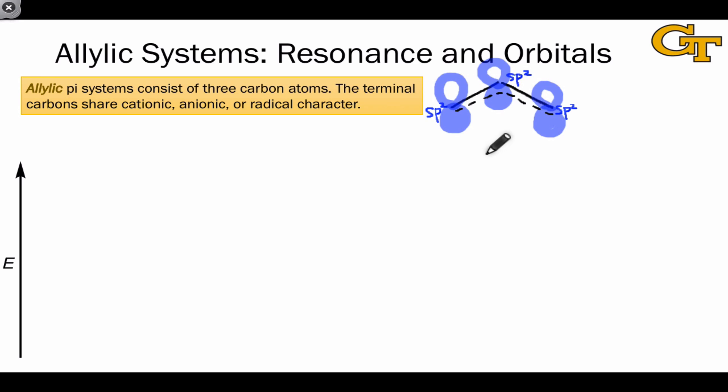One thing we're going to notice as we examine the allylic systems in this video is that the number of electrons is actually irrelevant to the orbital structure, at least in terms of shape. The cationic, anionic, and radical allylic systems actually share a lot of features in common when it comes to orbital shape. They differ most notably in their charge, of course, and the number of pi electrons appearing within the allylic pi orbitals.